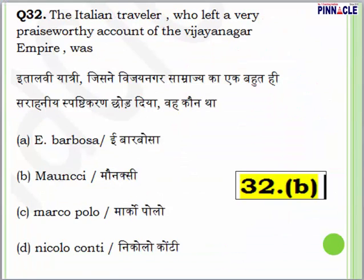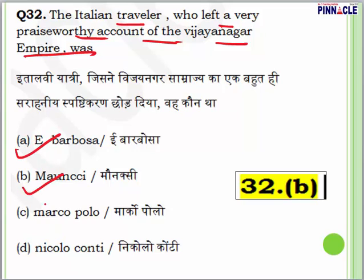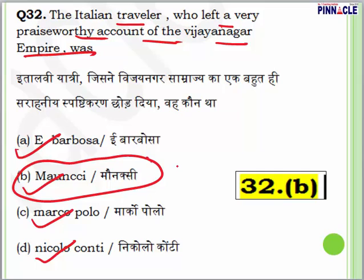Question 32: The Italian traveler who left a very praiseworthy account of the Vijayanagar empire is? Options are Barbarosa, Manuki, Marco Polo or Niccolo Conti. A lot of travelers visited the Vijayanagar empire — they had brisk trade and horses were their main import. Among these, one of the most important is Manuki — an Italian traveler who left a very praiseworthy account of the Vijayanagar empire.